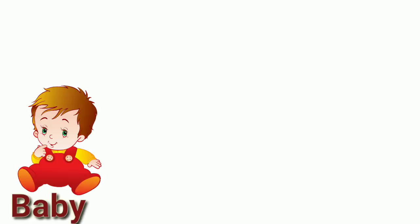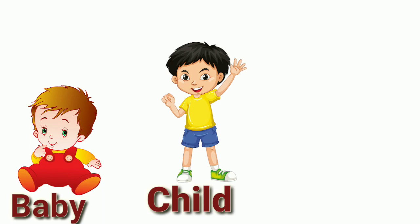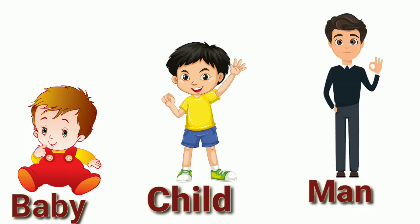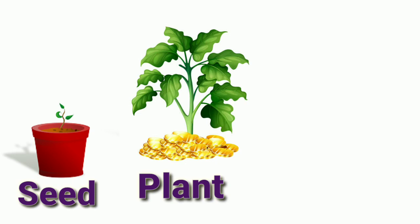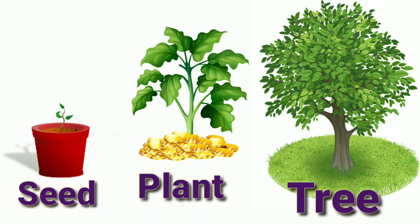Living things can grow. A baby grows into a child, and a child grows into a man. A calf grows into a cow. A seed grows into a plant, which then grows into a huge tree.